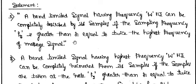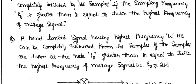For example, if you have a message signal of 15 hertz, then the sampling rate should be set to a minimum of 30 hertz or more. Similarly, when you want to recover your original message signal from the sampled signal, you also need to maintain a sampling rate greater than or equal to 2W.